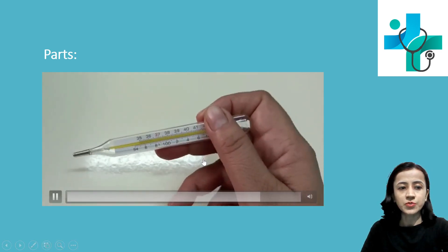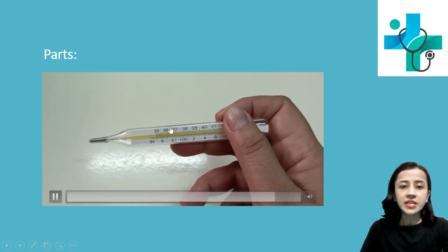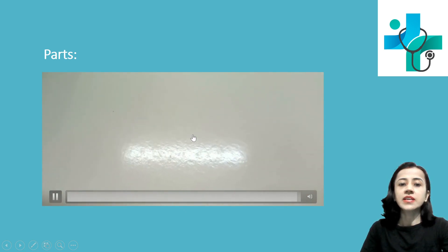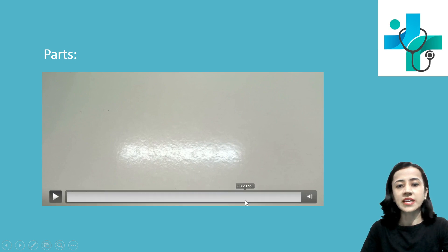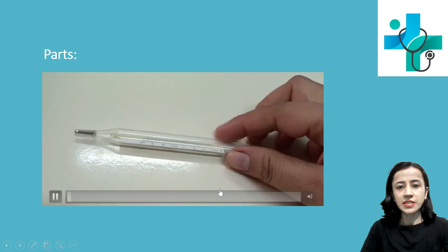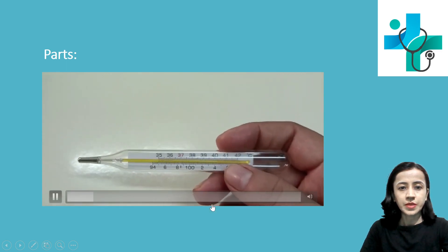You can see here this way. There are markings on the thermometer. On one side markings are in degree Celsius and on the other side markings are in degree Fahrenheit. You can see here, okay.